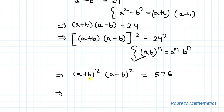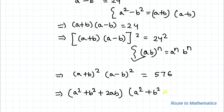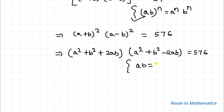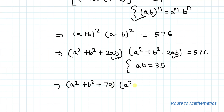Now we apply the algebraic identities for (a+b)² and (a−b)². So we have (a²+b²+2ab)(a²+b²−2ab) equals 576. From equation 2, ab equals 35, so 2ab equals 70. Substituting, we have (a²+b²+70)(a²+b²−70) equals 576.